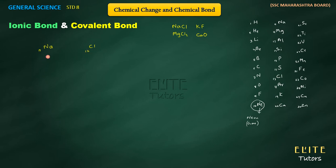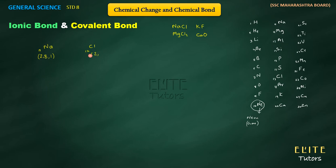The atomic number of sodium is 11 and the atomic number of chlorine is 17. If we remember the electronic configuration: sodium has 11 electrons, so the first orbit has 2 electrons, the second orbit has 8 electrons, and the third orbit has 1 electron — giving 2, 8, 1. Chlorine has 17 electrons: first orbit 2, second orbit 8, third orbit 7 — giving 2, 8, 7.